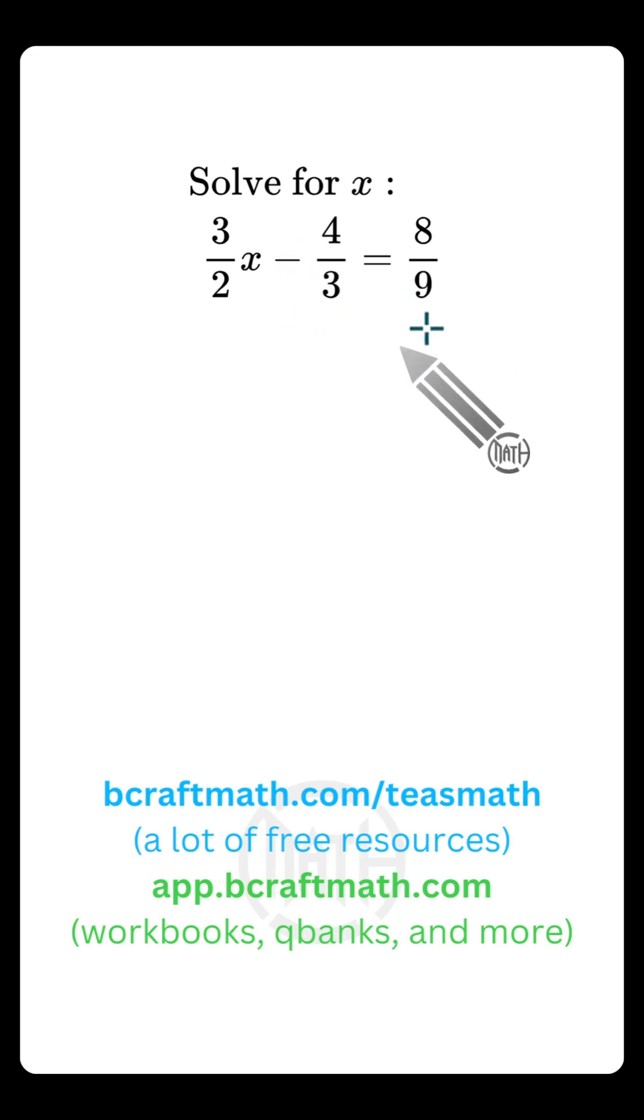Now some of you may be thinking, well I'm going to add four thirds to both sides and then divide both sides by three halves. You're taking the typical two-step equation approach, which is totally fine, but I do see students try that and they will get their fraction rules mixed up, when to get common denominators, how to divide fractions. So hear me out.